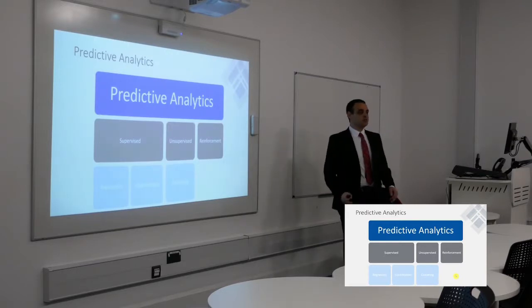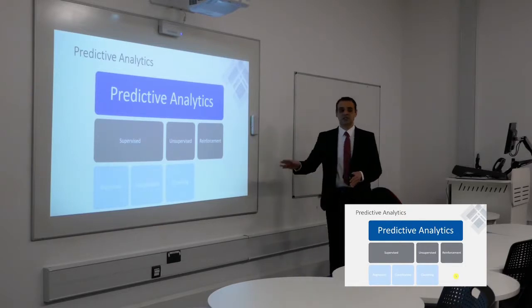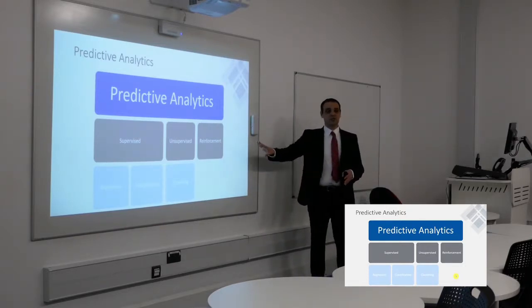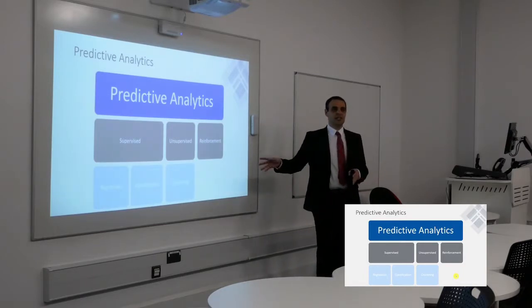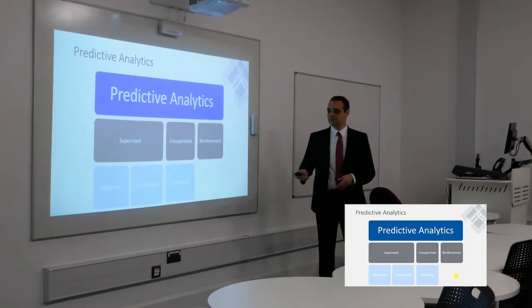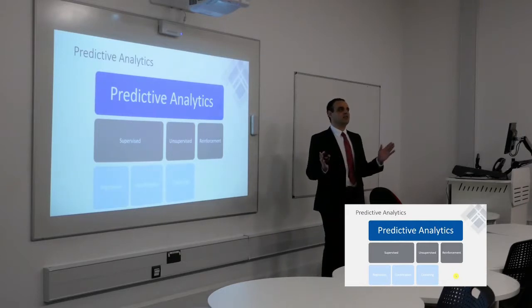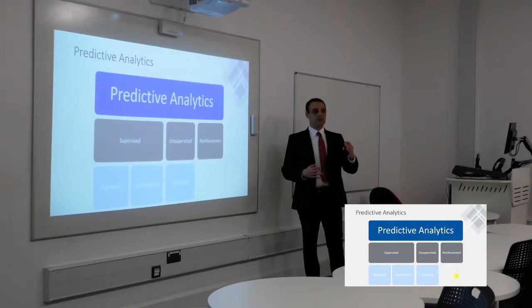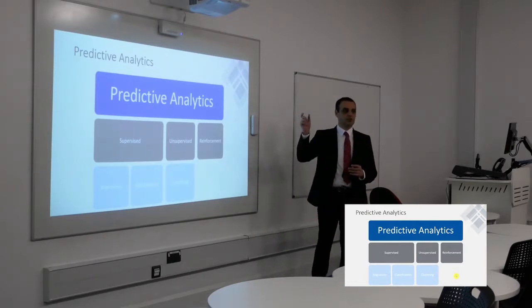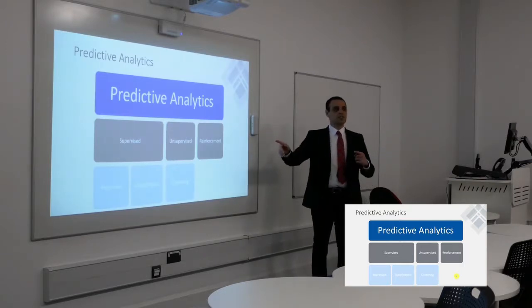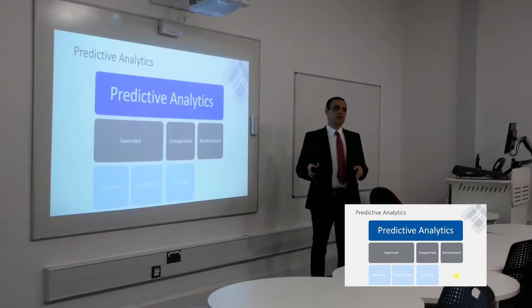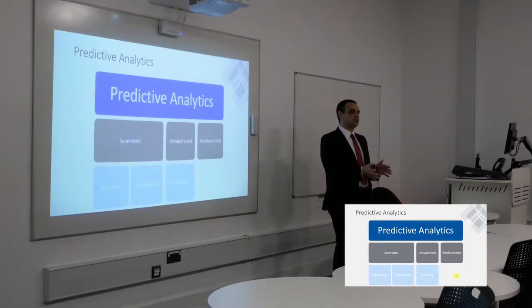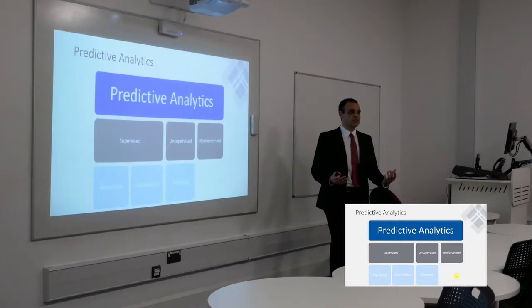Supervised learning is when you have a dataset that is tagged or labeled. For example, if you want to predict house prices in a particular area, you have all the house transactions with the tag — the value each was sold for — and you use this information to train the computer on real input. Classification is basically classifying things into categories: for example, whether an object in an image is a cat or a dog.